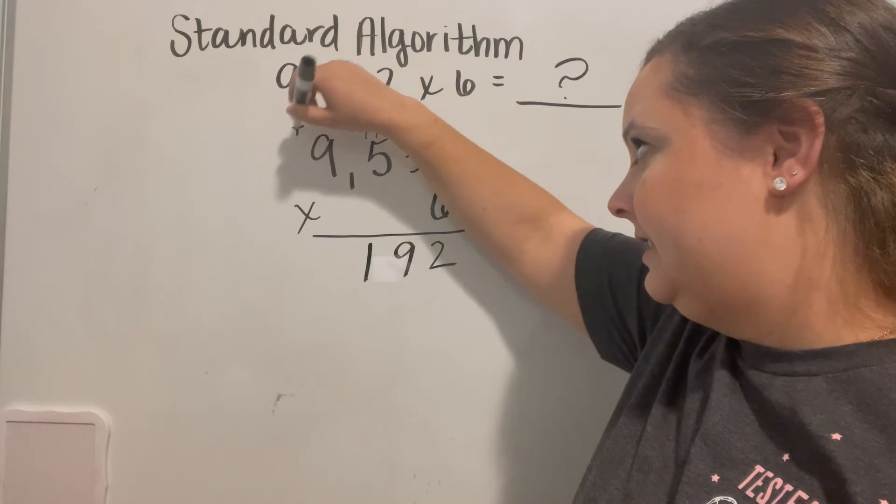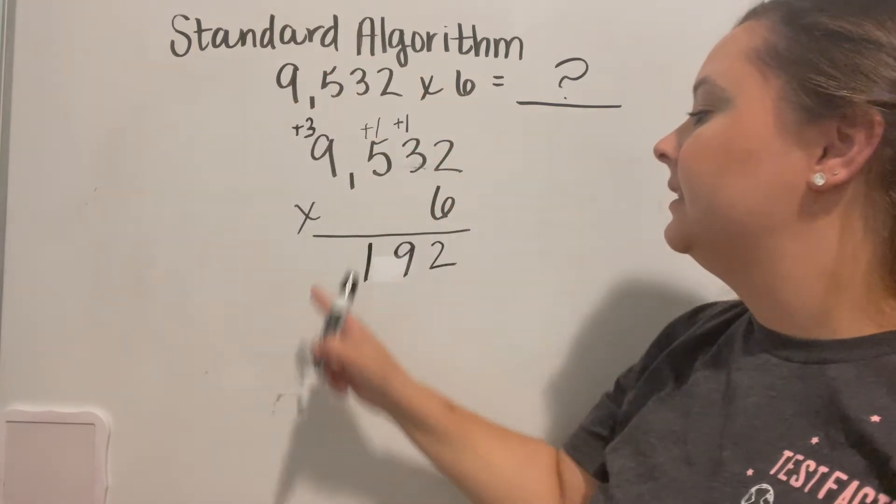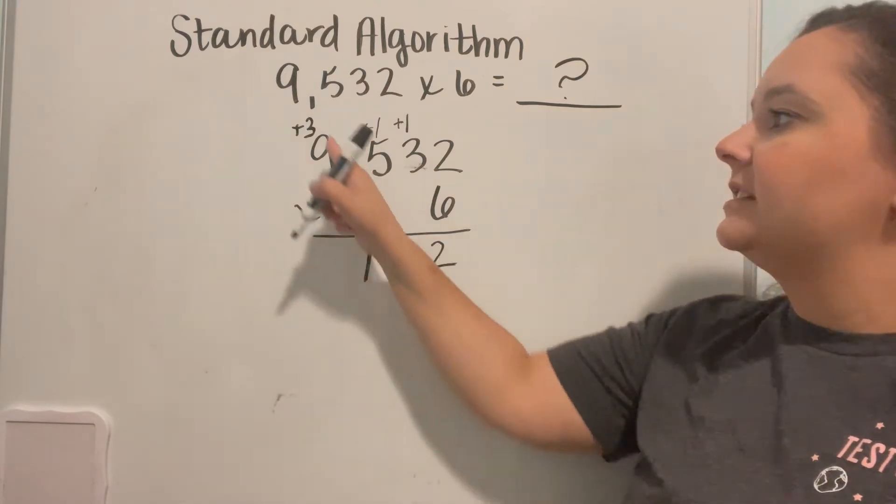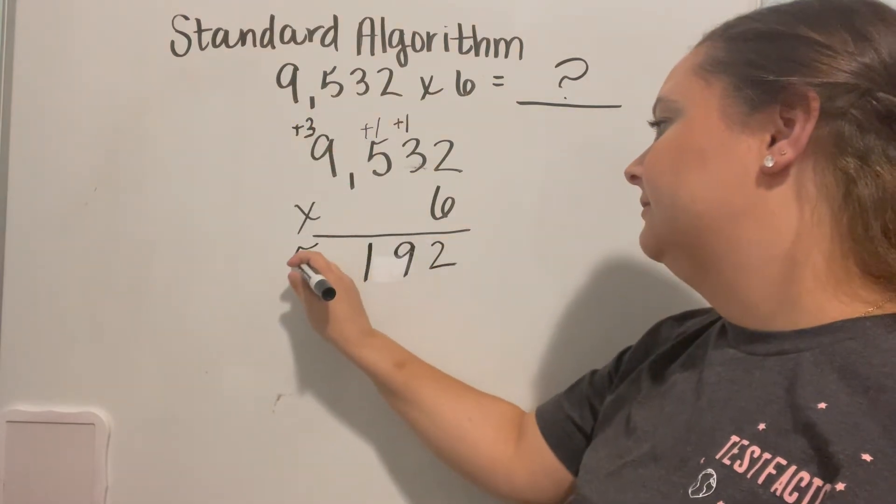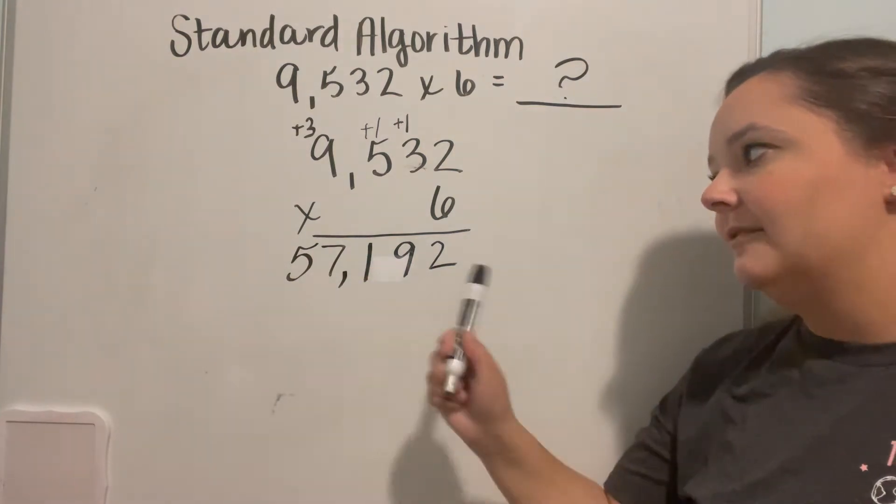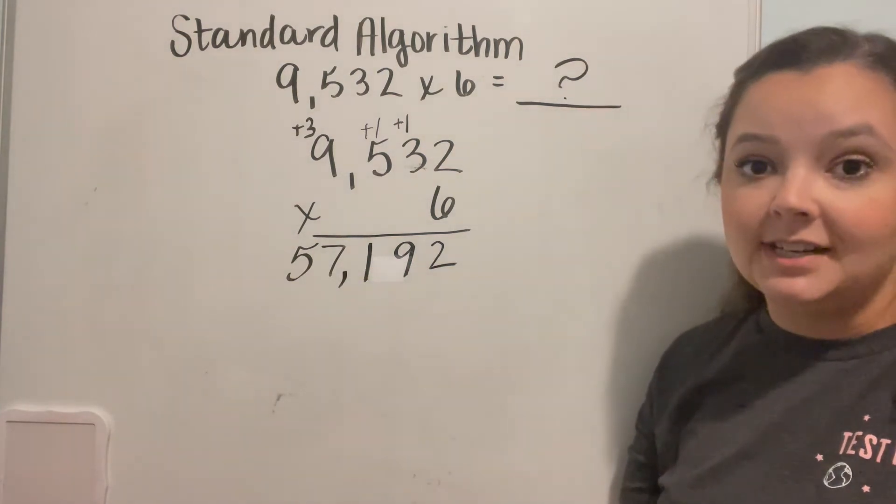Now I'm carrying a 3. Now I have 9 times 6, which gives me 54 plus 3 gives me 57. And we end up with a product of 57,192.